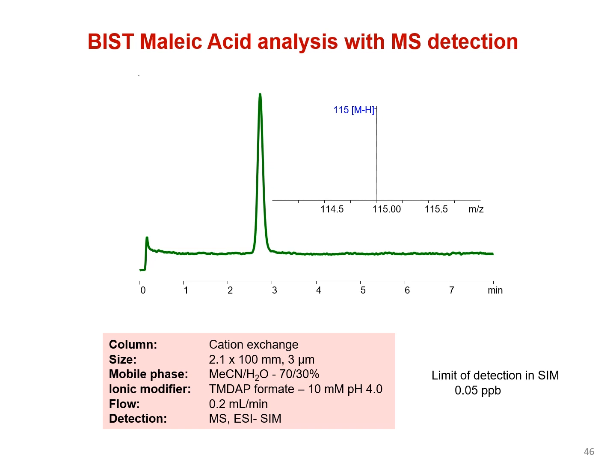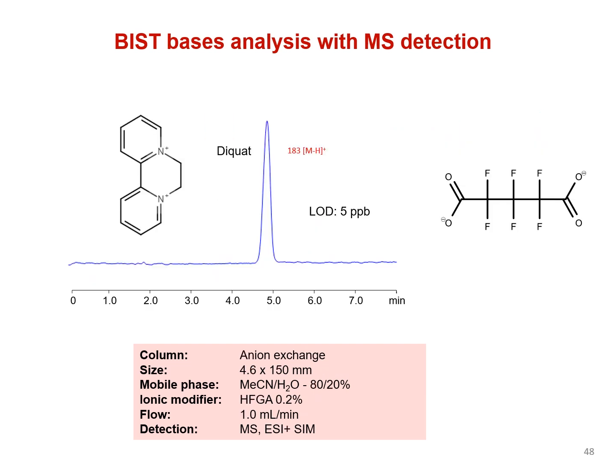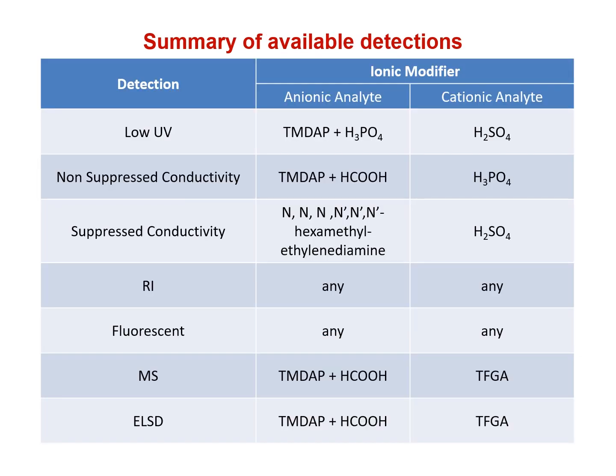BIST is also compatible with mass spec, specifically electrospray ionization, as shown here with the retention of maleic acid. We used a Shimadzu LC-MS 2020 mass spec and used the selected ion monitoring mode and were able to achieve a low detection limit down to 0.05 parts per billion. Here's another application of BIST with ESI- using selected ion monitoring where different organic acids were retained and detected. We can see clear retention of diquat this time using positive electrospray ionization with HFGA.